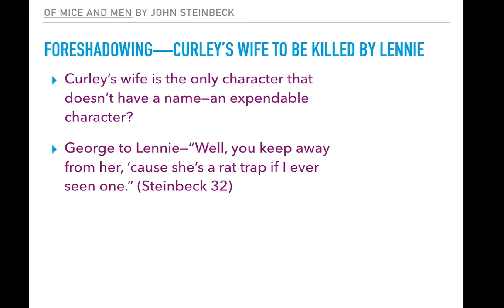There's also foreshadowing about who the person was that was going to be killed — Curly's wife. Curly's wife is the only character that doesn't have a name. So was she an expendable character right from the start? Was the fact that she didn't have a name something that foreshadowed that she would be the one who gets killed in the end? Also, there's a point where George is talking to Lennie and he says, 'You keep away from her because she's a rat trap if I ever seen one.' So even George knows at this point that Curly's wife could be a problem, and this is a moment of foreshadowing in the novel.